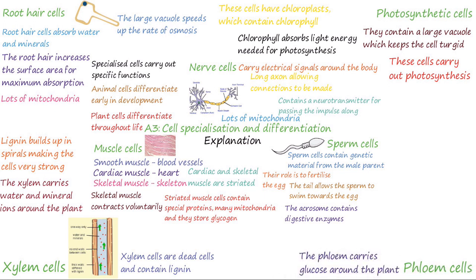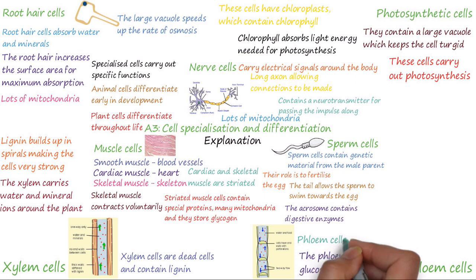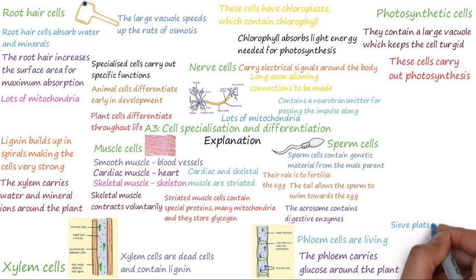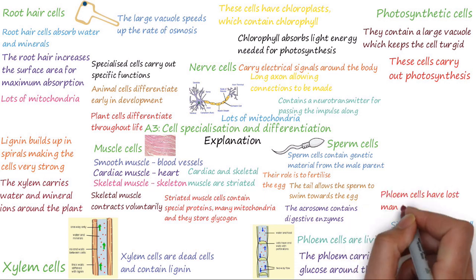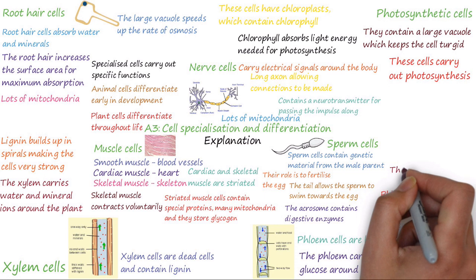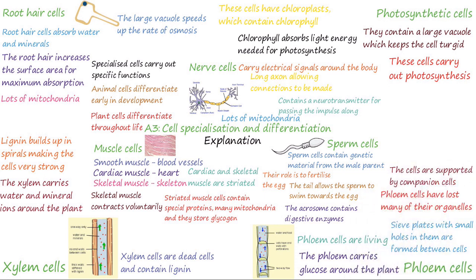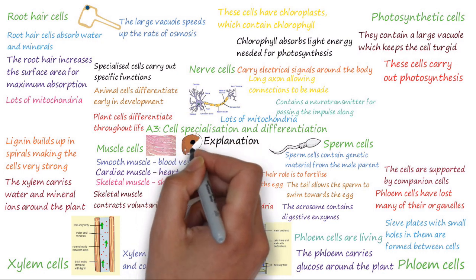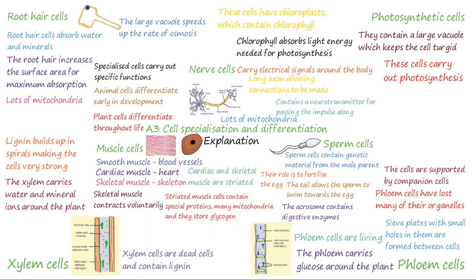Phloem cells carry glucose made in photosynthesis to the rest of the plant. Like xylem cells, phloem cells also form tubes, but these cells are actually living. They are able to form tubes because the cell walls between adjacent cells break down to form sieve plates with small holes in them, allowing water carrying the glucose to move through the tube. To allow the dissolved sugars to travel easily through the tube, phloem cells have lost many of their organelles. The cells are instead supported by companion cells, which are found next to the phloem cells. These transfer energy made in their mitochondria to the phloem cells, and this energy allows the dissolved sugars to move up and down the plant.